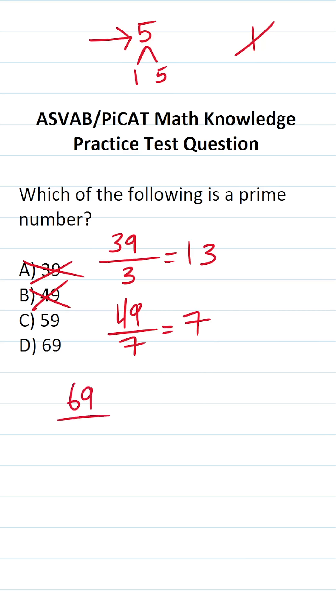What about 69? 69 is divisible by 3. This is going to be 23. Therefore, it's not prime.